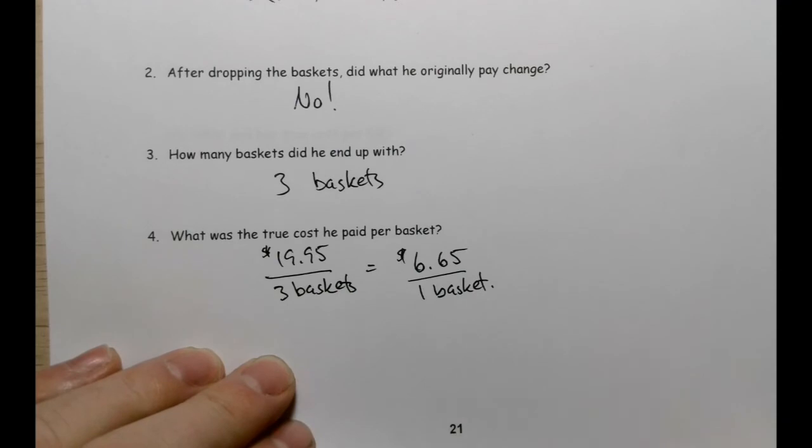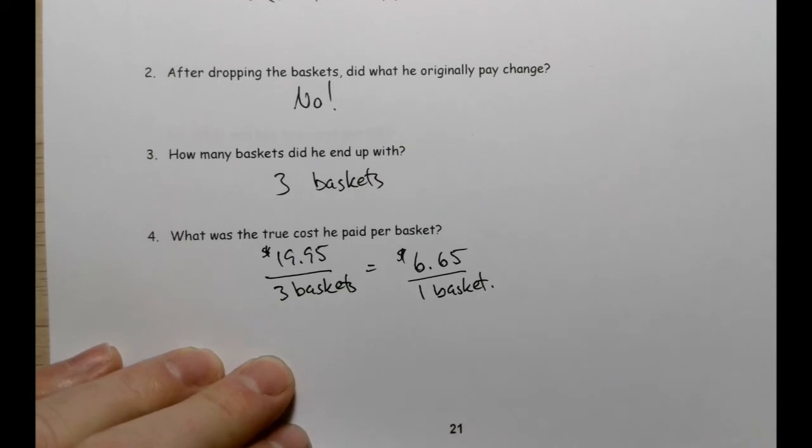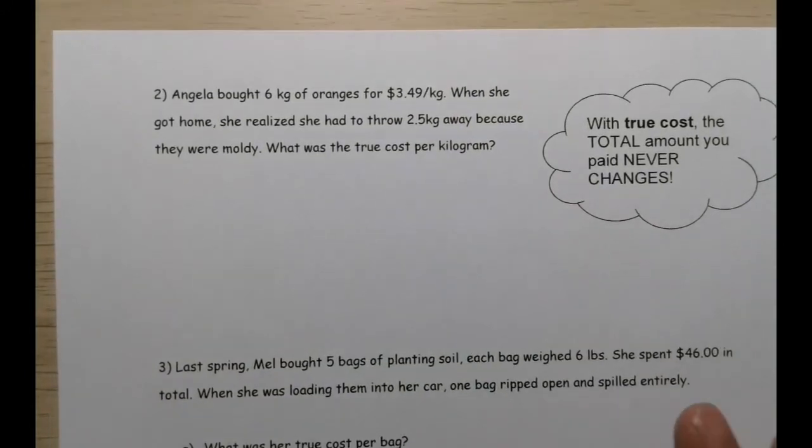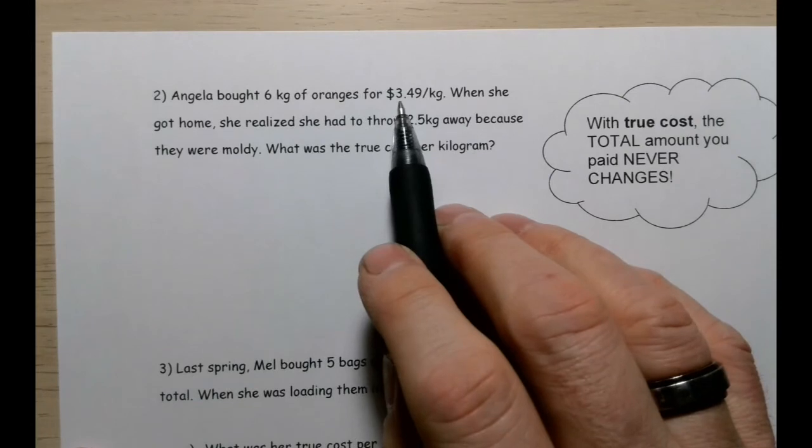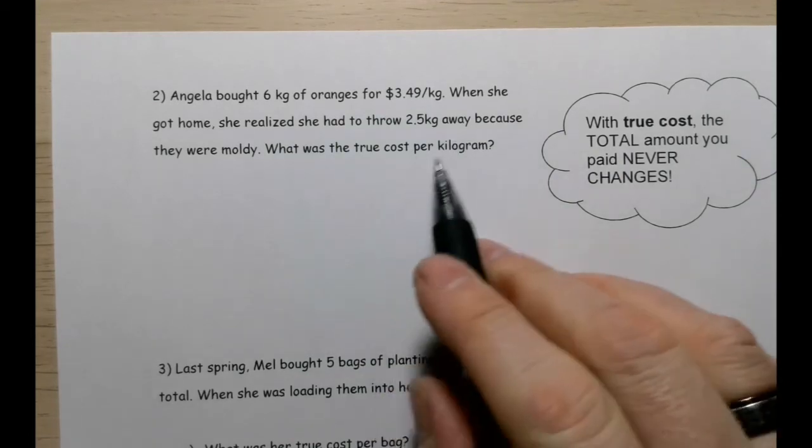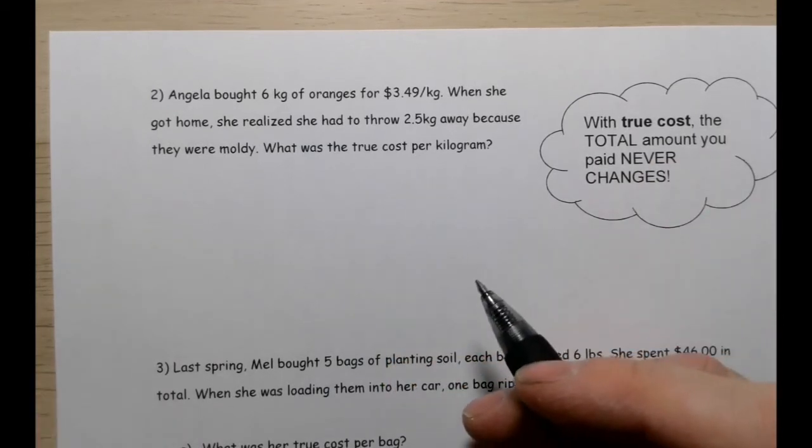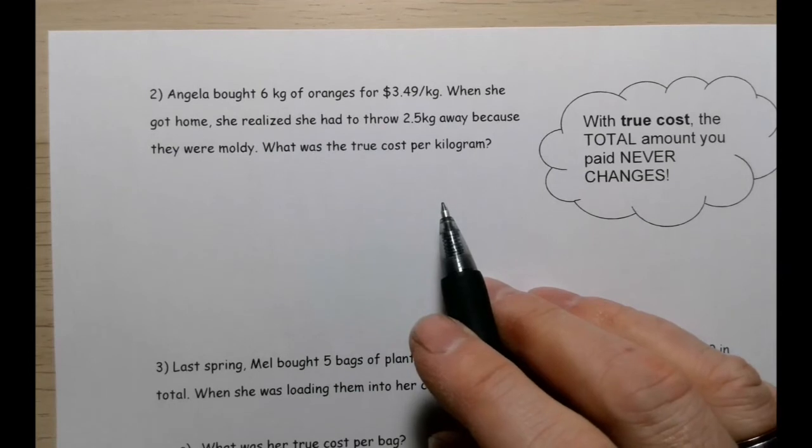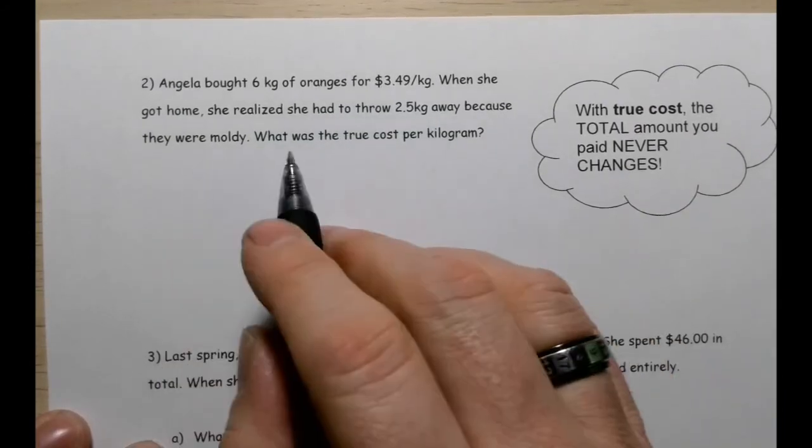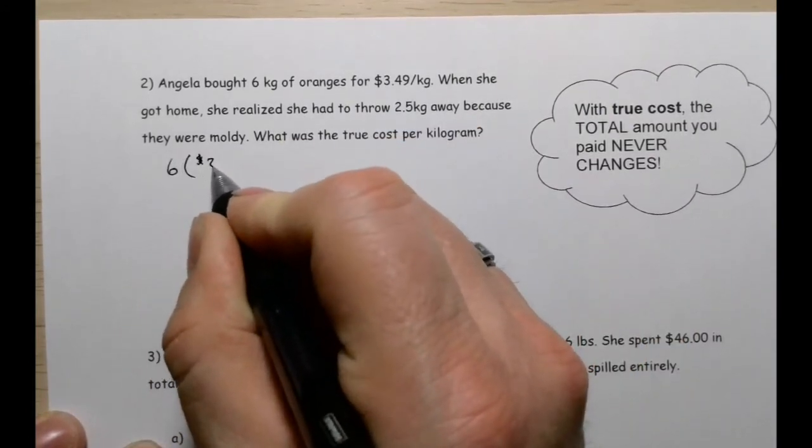Let's take a look at another example. Angela bought six kilograms of oranges for $3.49 per kilogram. When she got home, she realized she had to throw away two and a half kilograms because they were moldy. Like the oranges in the middle of the bag sort of thing - they get squished and then they get moldy. So what was the true cost per kilogram? Now bear in mind, the total amount that you pay never changes. So what they've got to do is figure out how much did she pay. So six kilograms multiplied by $3.49 per kilogram. So six times $3.49, she paid $20.94 for those six kilograms of oranges.